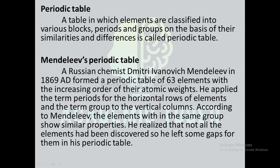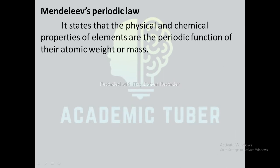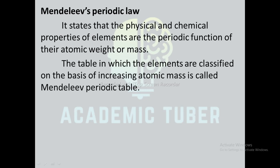He realized that not all the elements had been discovered, so he left some gaps for them in his periodic table. Mendeleev's periodic law states that the physical and chemical properties of elements are the periodic function of their atomic mass or weight. The table in which elements are classified on the basis of increasing atomic mass, or the table that follows Mendeleev's periodic law, is called the Mendeleev's periodic table.